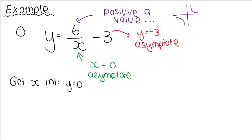Now for the example: y equals six divided by x minus three. Immediately we see it's a hyperbola because we're dividing by x. Step one — look at the shape. We have a positive six, so a positive 'a' value means the graph will lie in the first and third quadrants — that one and this one over here — not in the second or fourth quadrants.